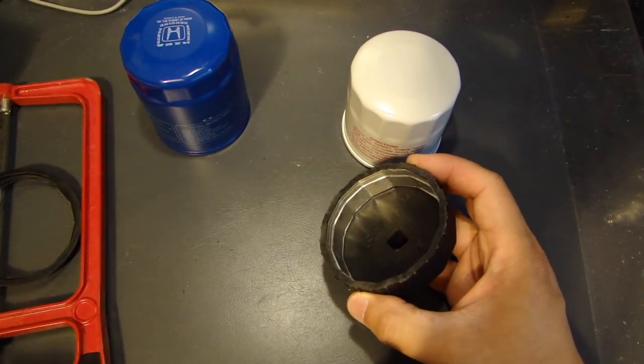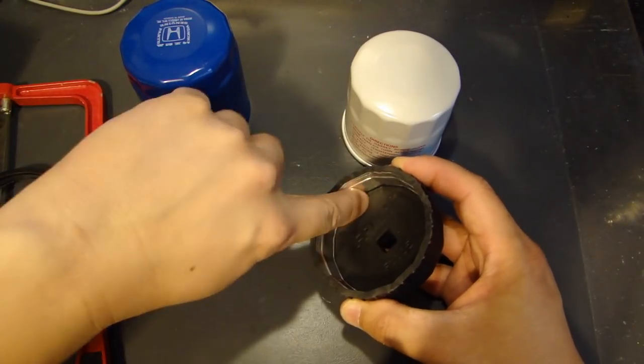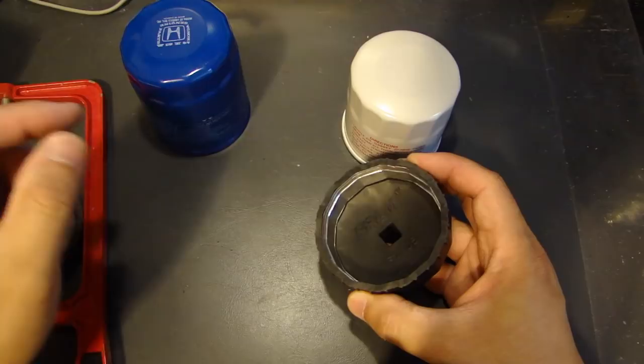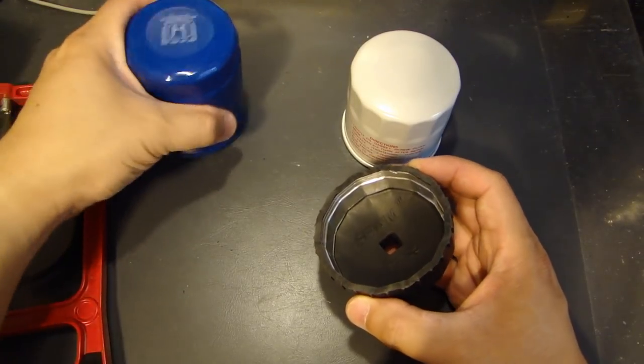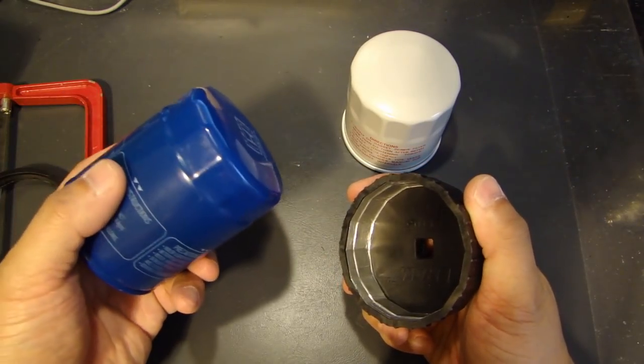And once you do that, what happens is that you're building up the layers on this, making this diameter a lot smaller. So the 65 millimeter, you're going to convert it to a 64 millimeter.